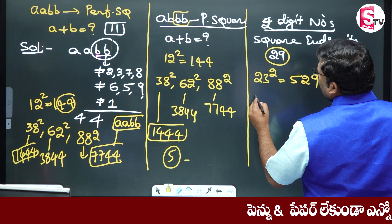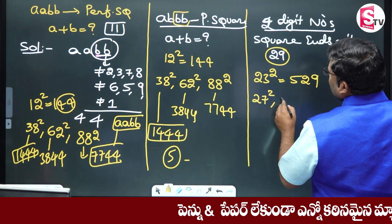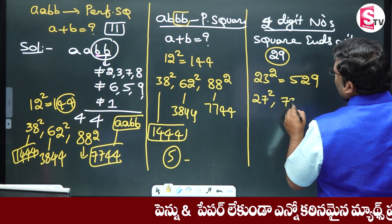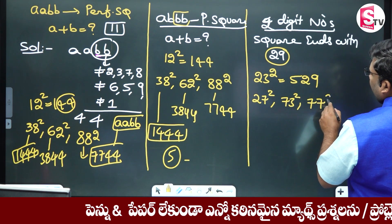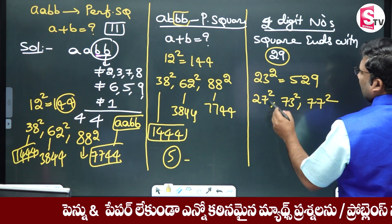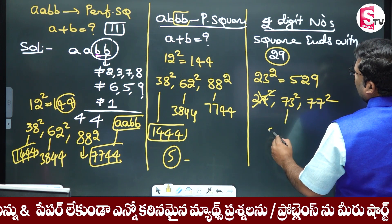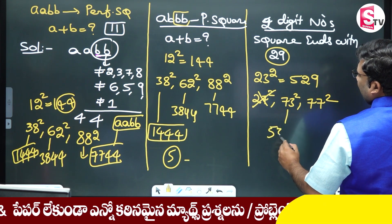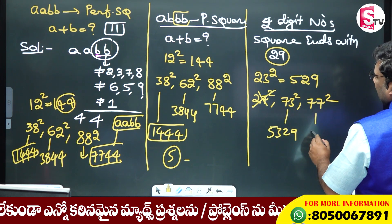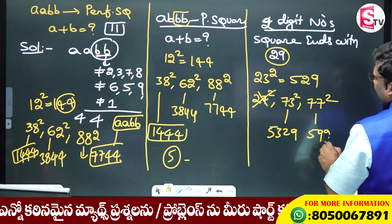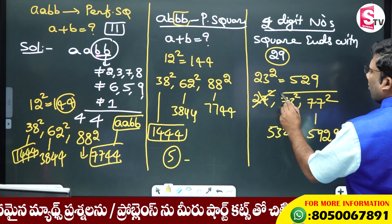YABB minus 23, YABB plus 23, 1 minus 23. Consider 73 square, which equals 5329. And 77 square ends in 59.